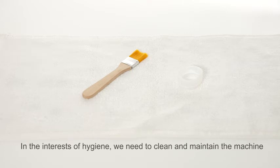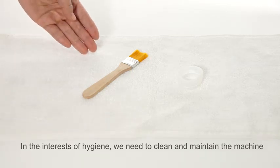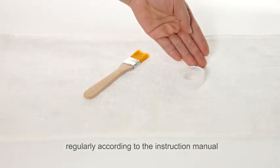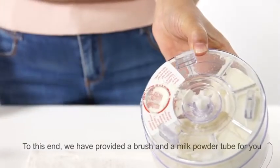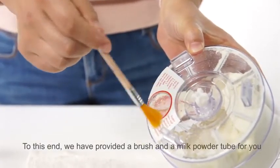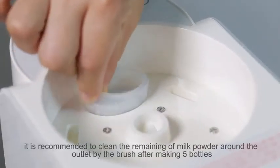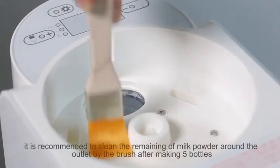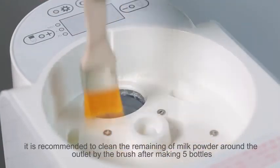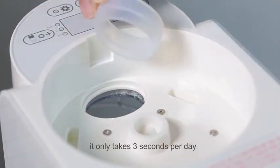In the interests of hygiene, we need to clean and maintain the machine regularly according to the instruction manual. To this end, we have provided a brush and a milk powder tube for you. In order to ensure the safety of your baby, it is recommended to clean the remaining of milk powder around the outlet by brushing after making five bottles. It only takes three seconds per day.